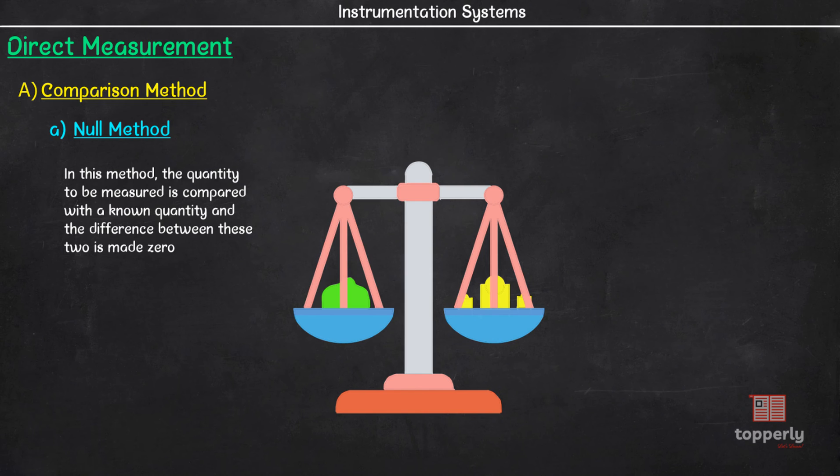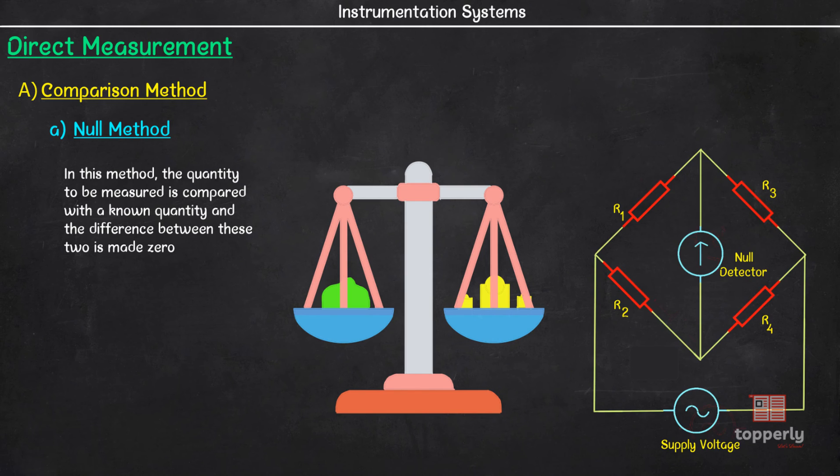Another example of null method is measurement of resistance using Wheatstone bridge. For instance, if we are asked to find the resistance R1, we will keep on adjusting the resistances R2, R3 and R4 such that the current through the galvanometer is zero and thereby find the resistance of R1. So effectively we are nullifying the current through the galvanometer and therefore this method is null method.